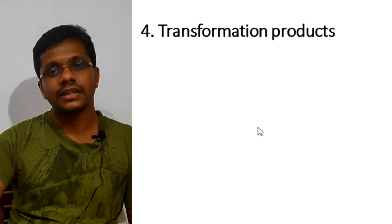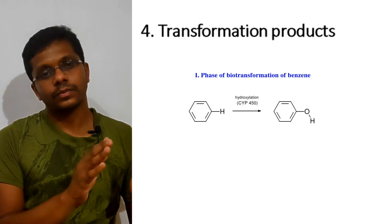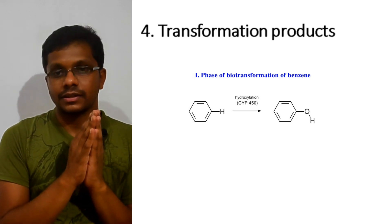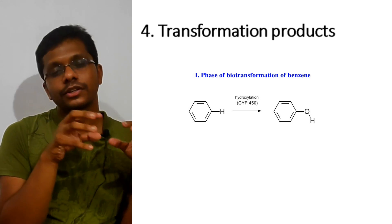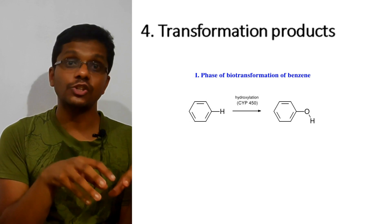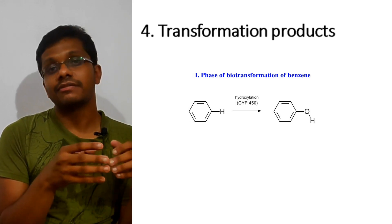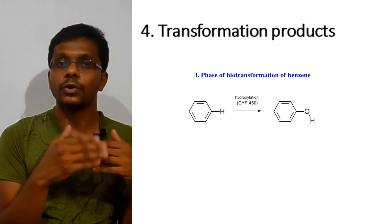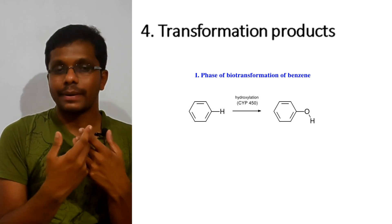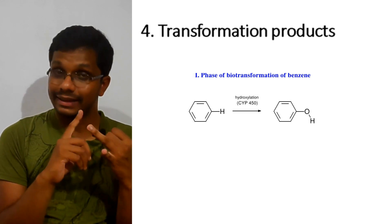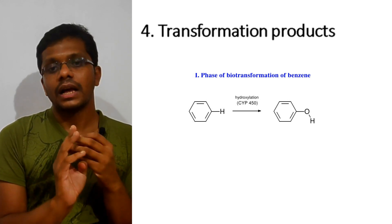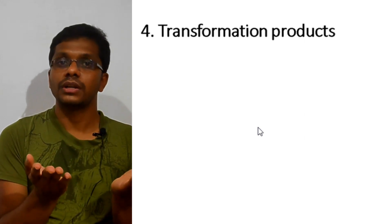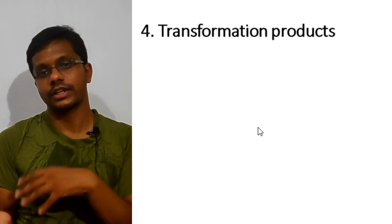The next category is transformation products, where one compound is transformed into a structurally related but functionally divergent, value-added product. This transformation can be done chemically, but chemical transformation has low positional specificity and stereospecificity. An advantage of biotransformation is that it requires low temperature and pressure — no extreme conditions are needed. Biotransformation can be done by living cells, dead cells, or by enzymes. A classical example is the conversion of ethanol into acetic acid; another is the production of semisynthetic penicillin.